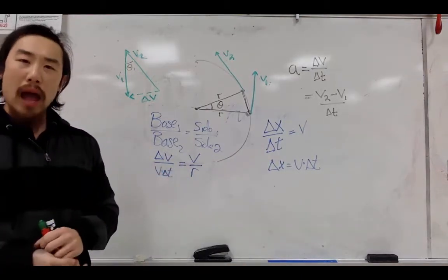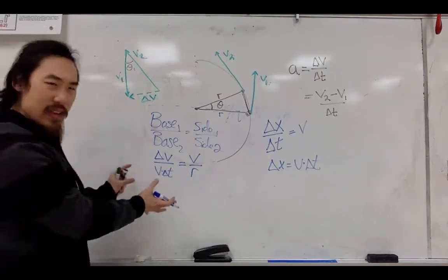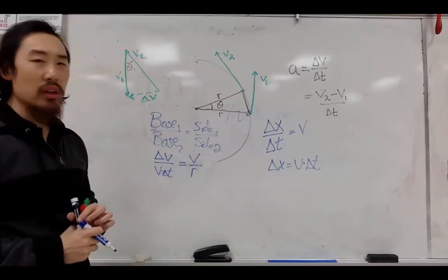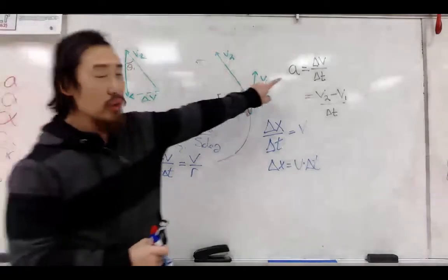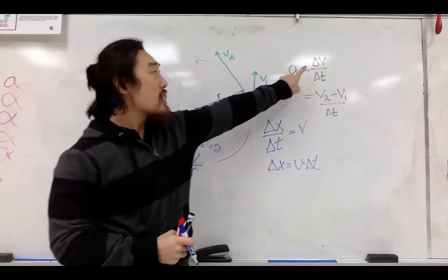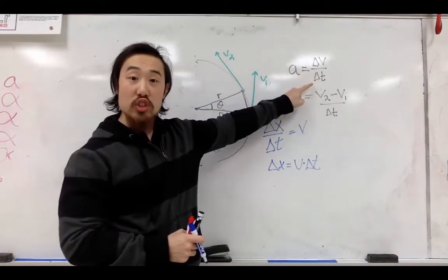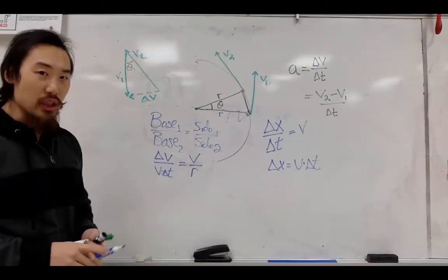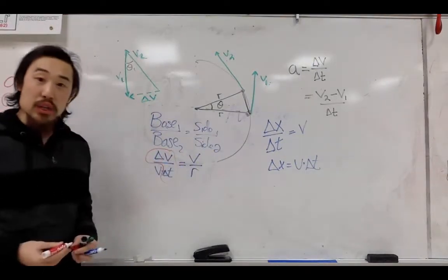So I'm going to replace this delta x with that newfound equation. Now, at this moment, hidden in this equation is the equation for acceleration. Let's remind yourselves what the acceleration equation is. Looking up here, we know that acceleration is the change in velocity over the change in time. So do you see the acceleration equation here? I sure do. And I circled it in red.